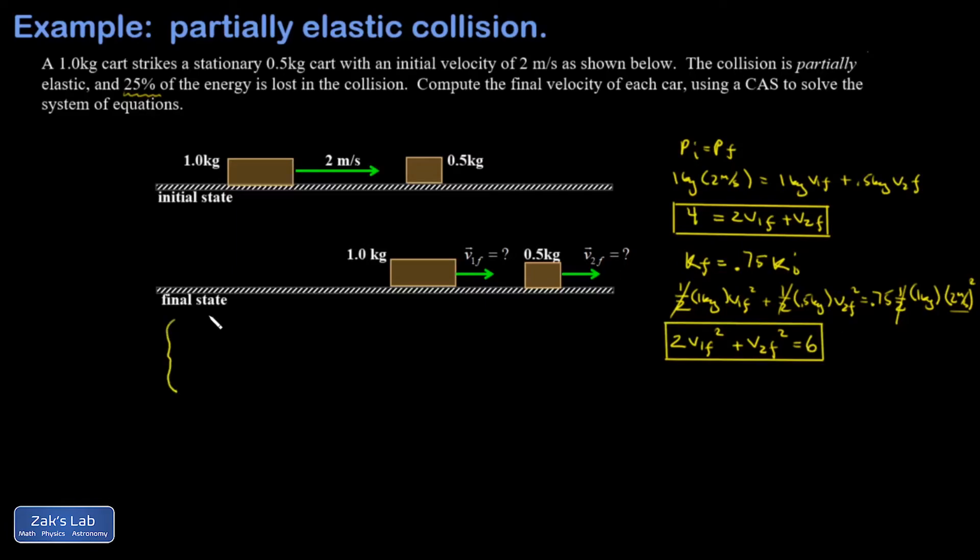I've got my second equation. Now this is just an algebra problem with a system of equations: 2V1 final plus V2 final equals 4, and 2V1 final squared plus V2 final squared equals 6. One way to handle this is substitution, taking the first equation and solving for V2 final, then plugging that into the second equation.